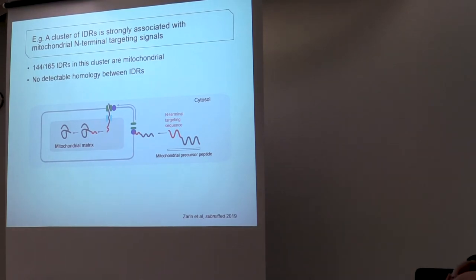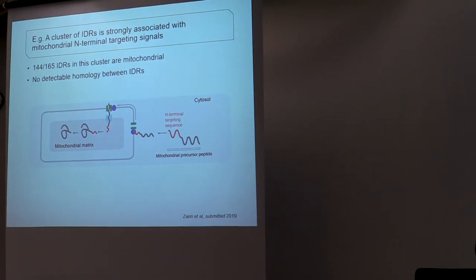So one of the things that we thought we could do with this data is, if there are certain disordered regions that share evolutionary signatures, we hypothesized that we would be able to extract some functional information from them. For example, one of the clusters of disordered regions that we found is strongly associated with these mitochondrial N-terminal targeting signals. So the majority of the IDRs in the cluster are mitochondrial, and they're also enriched in mitochondrial phenotypes from the yeast phenotype data that's available. And again, there's no detectable homology between the disordered regions in this cluster.